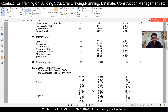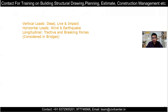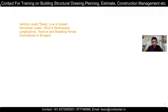The next thing we will discuss is live load. Before that, to recap the overall loads: we've discussed dead load, and now we're going to discuss live load as part of vertical loads. The supporting code for live load is IS 875 Part 2.